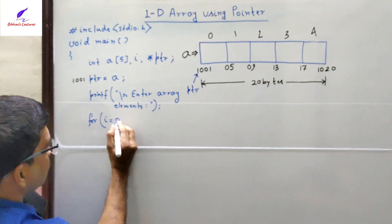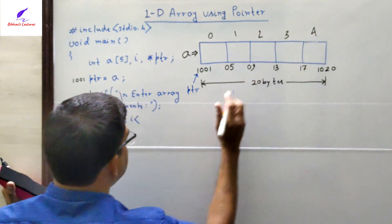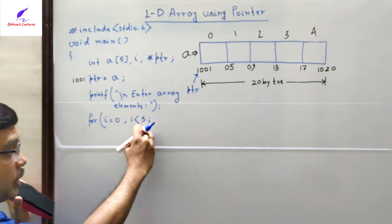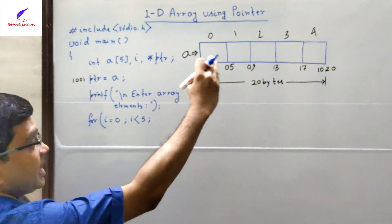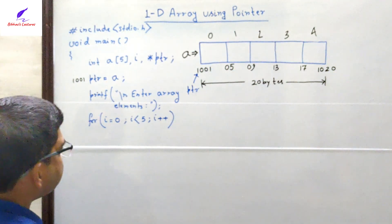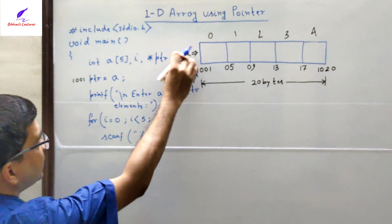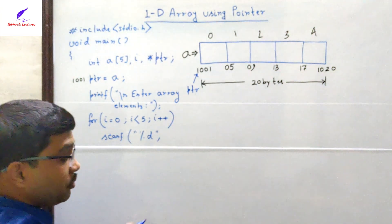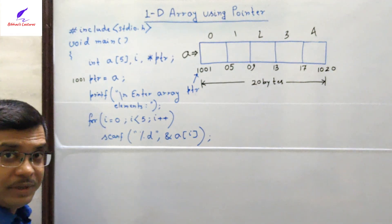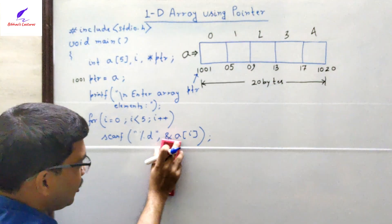Inside the loop we use scanf("%d", ptr + i). We are not writing ampersand of a[i] as in the previous approach — instead we store values using the pointer. Initially i = 0, so ptr + i = 1001 + 0 = 1001. Since the pointer itself is an address, no ampersand symbol is required. The scanned value is stored directly at address 1001.